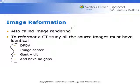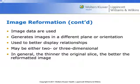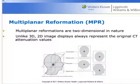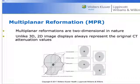For image reformatting, we are using image data — no longer raw data — and we are going to generate images in a different planar orientation. We can better display relationships this way, and we can do these three-dimensionally or two-dimensionally. A multi-planar reformat, or MPR, is going to be a two-dimensional image, but it can be oriented in any direction — coronal, oblique, sagittal, or even reconstructed in the axial plane. Since MPRs are 2D in nature, they will retain the original CT attenuation value, so we will be able to measure a Hounsfield unit off of an MPR. That will not be the case when we talk about three-dimensional imaging.